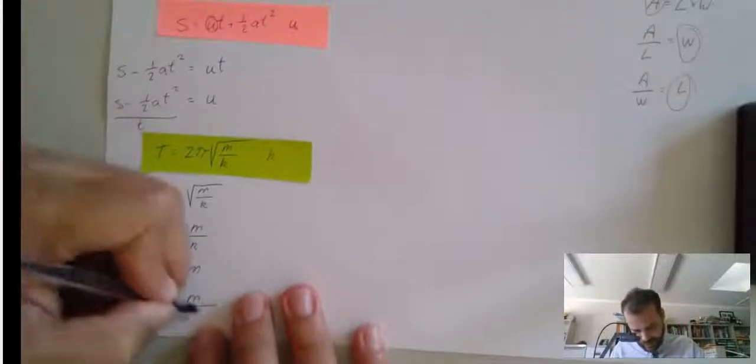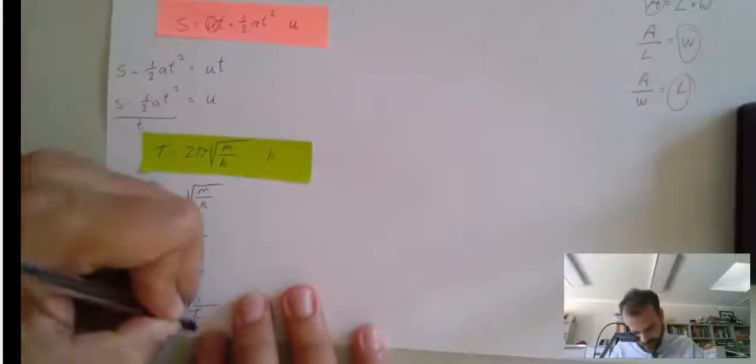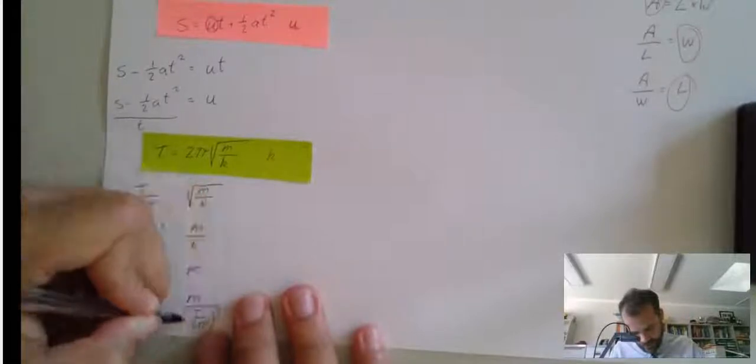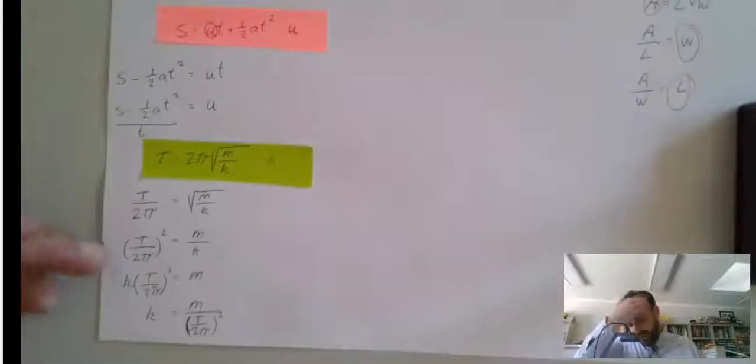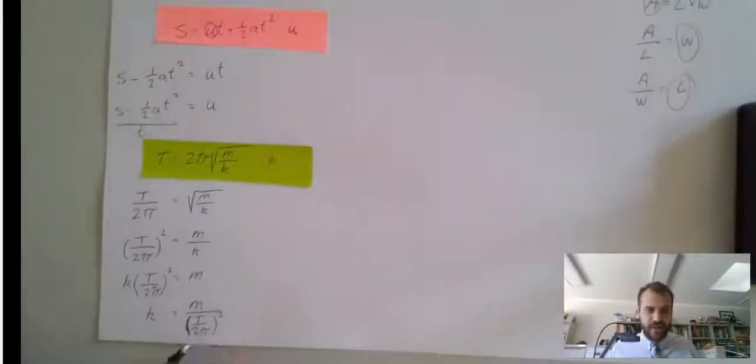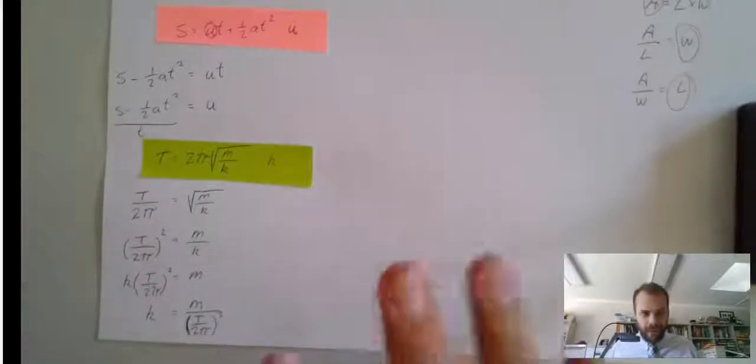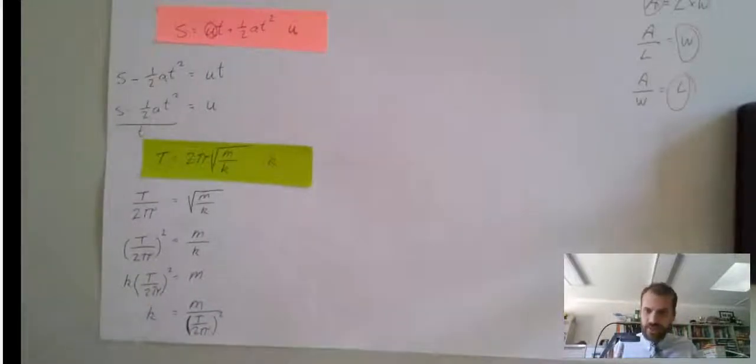Bracket t over 2 pi squared. Okay, there are some other things we can do to sort of neaten this up, because it's a fraction on a fraction, and it's a bit ugly. But, k is the subject, I'm going to leave it there.